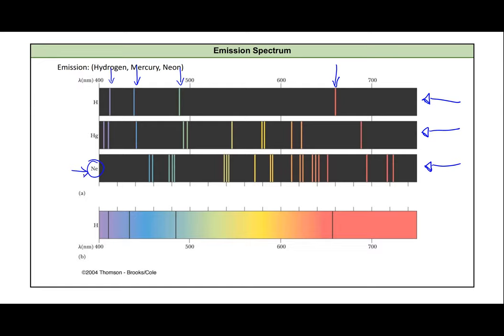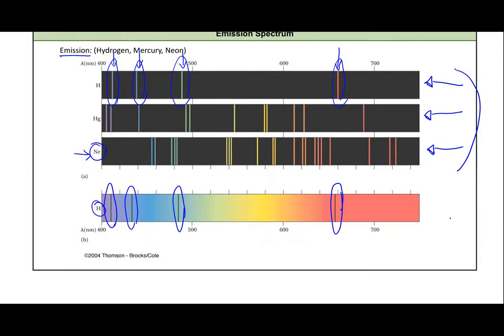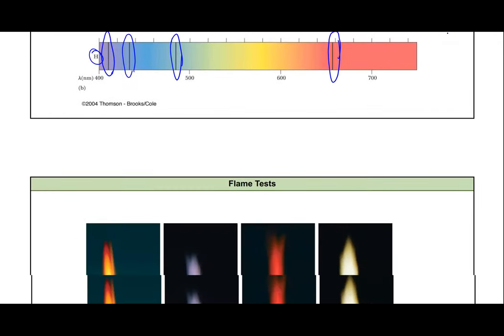These are all the wavelengths that it actually emits. We can think of these as emission spectra. Another way, this is hydrogen still here, we can look at the entire spectrum of visible light and we can show the wavelengths that it absorbs as well, which match the ones that it emits. Two ways to think about it.